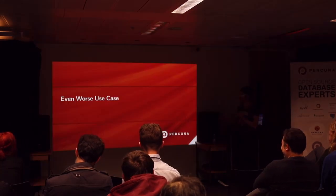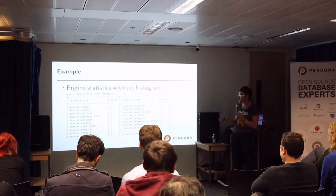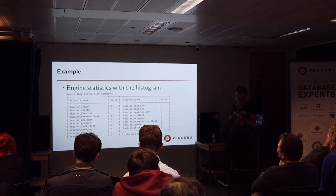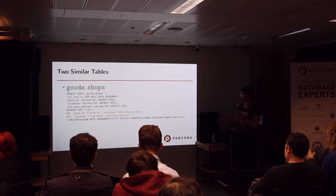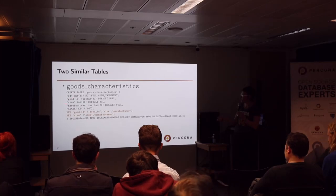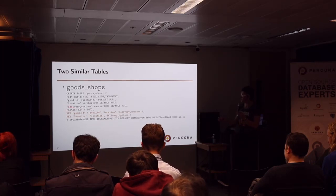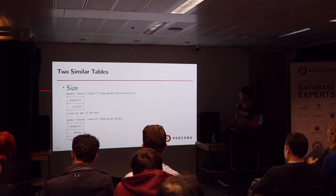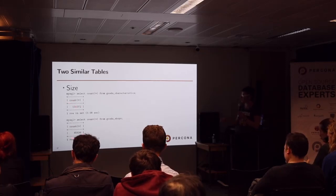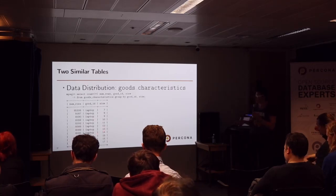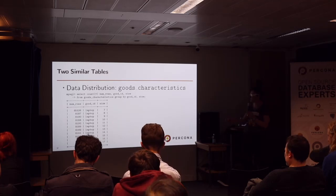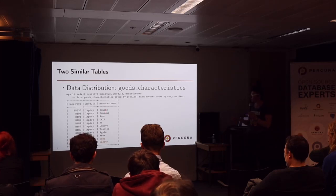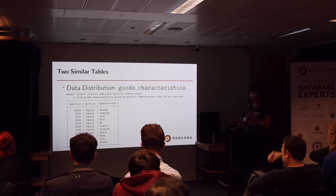The engine statistics confirm the improvement. Even in a worse case, for the first use case you can use STRAIGHT_JOIN. Now for use case two: we have two tables — 'good_characteristics', which has nice long indexes (id, good_id, size, manufacturer), and 'good_shops', which also has nice indexes (location, delivery option, shop_id). The numbers: 100 rows, 131,000 rows, 65,000 rows. Here's the data distribution: take laptops — this auto shop doesn't like laptops with big screens, so they only sell small-screen laptops. There are only a few such items.